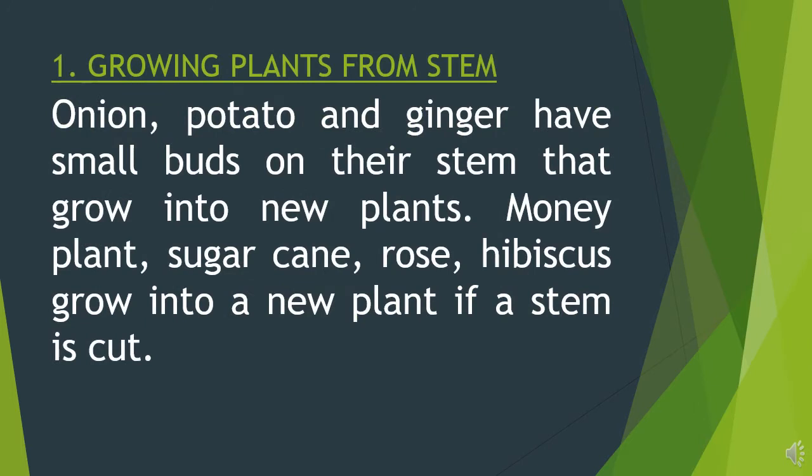Number 1: growing plants from stems. Onion, potato and ginger have small buds on their stem that grow into new plants. Money plant, sugar cane, rose and hibiscus grow into a new plant if a stem is cut.